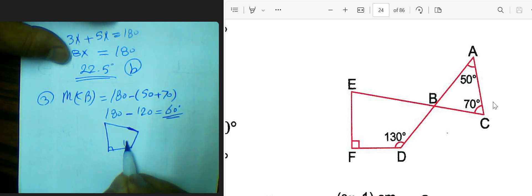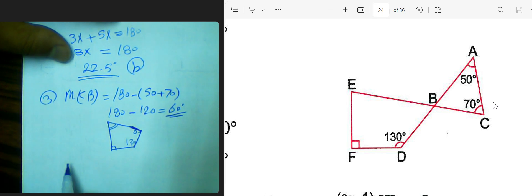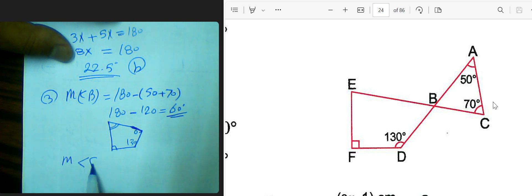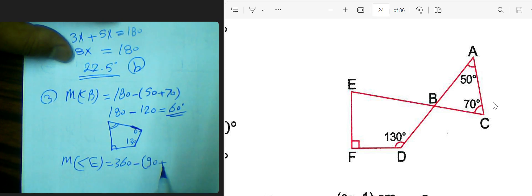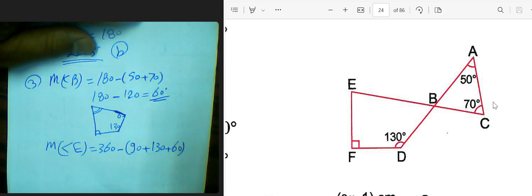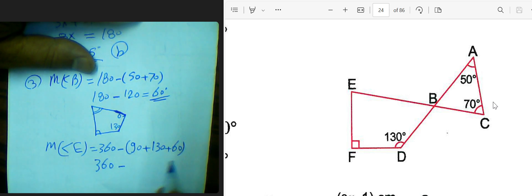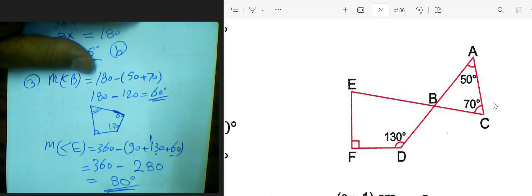Then we have 30 and here 60 and this angle I don't know. Measure of angle E equals 360 subtract by 90 plus 130 plus 50. 360 subtract by the sum. The result will be 80 degrees.